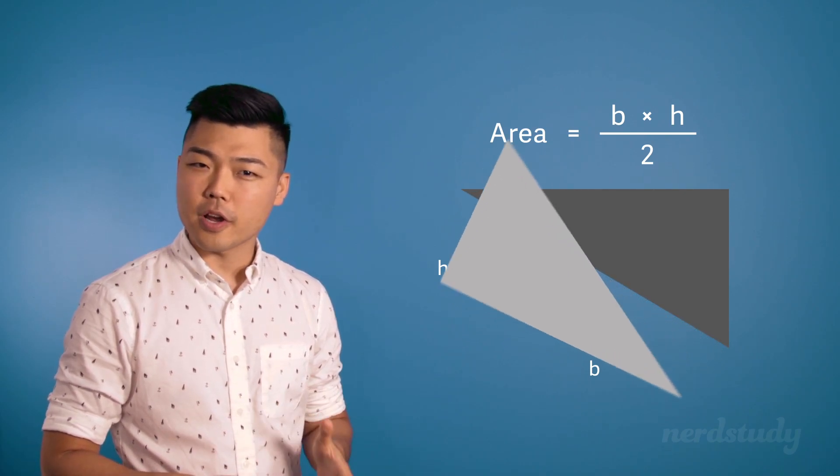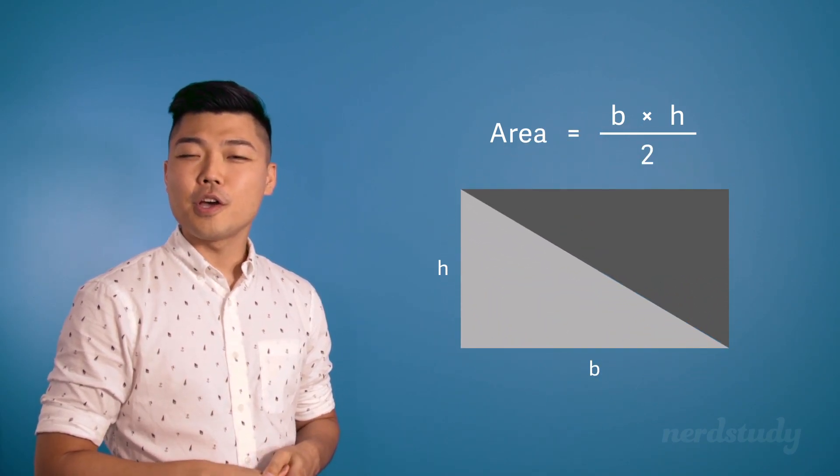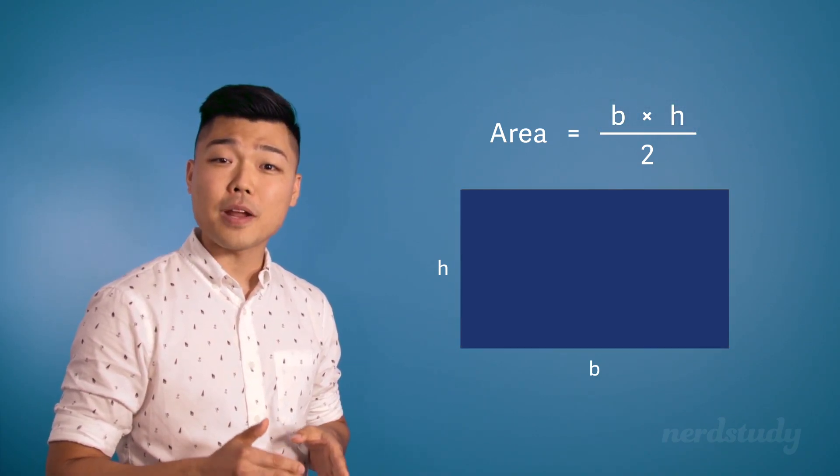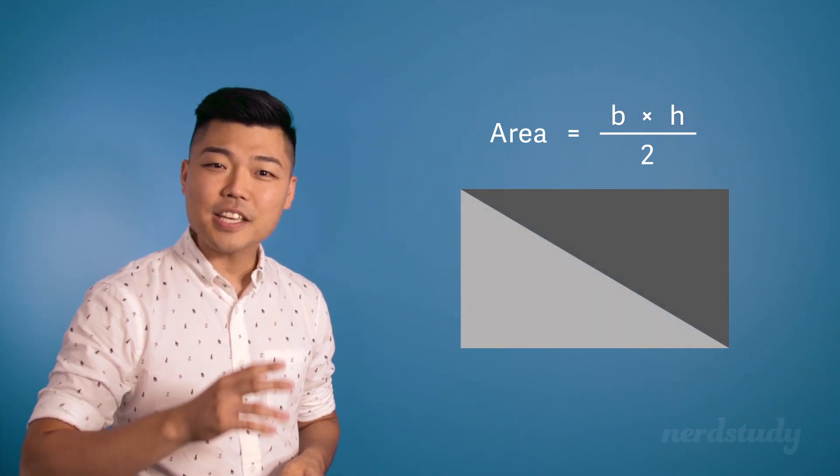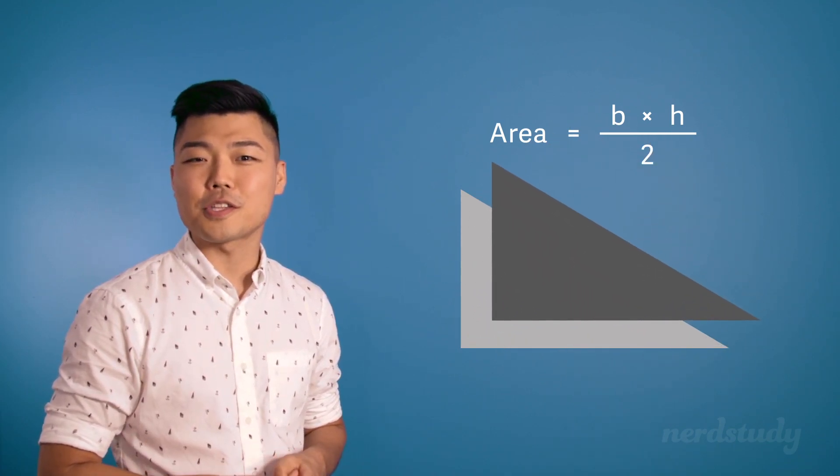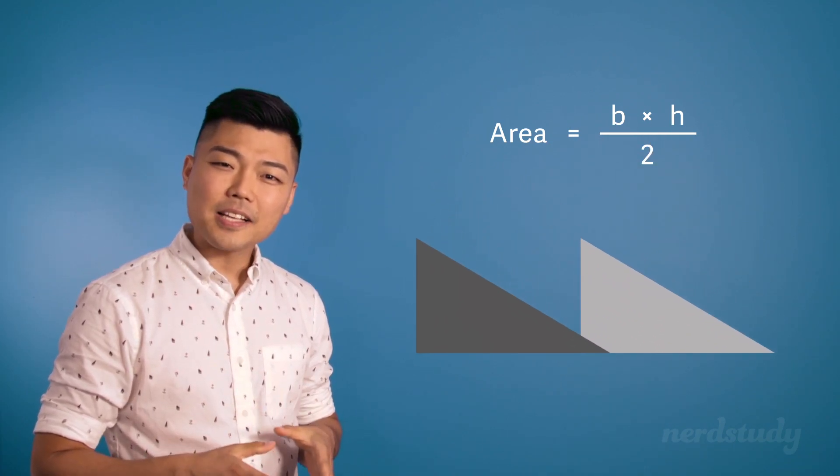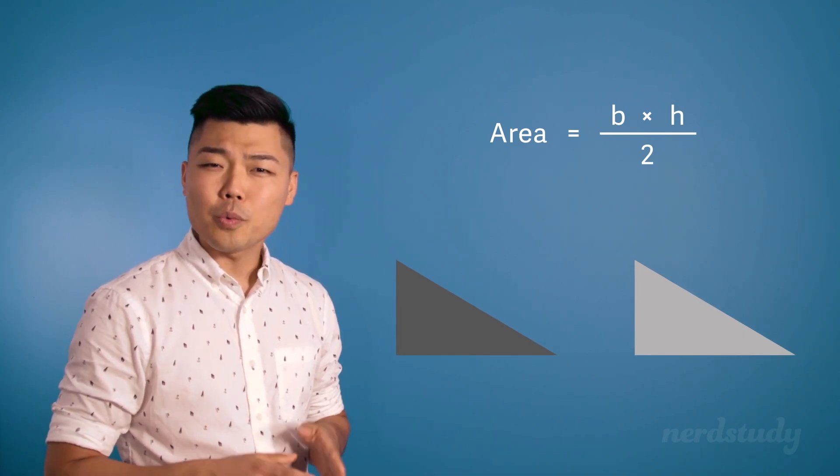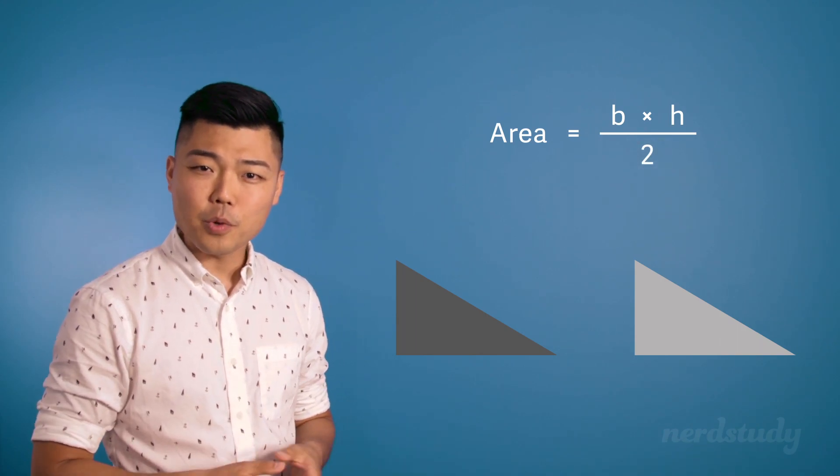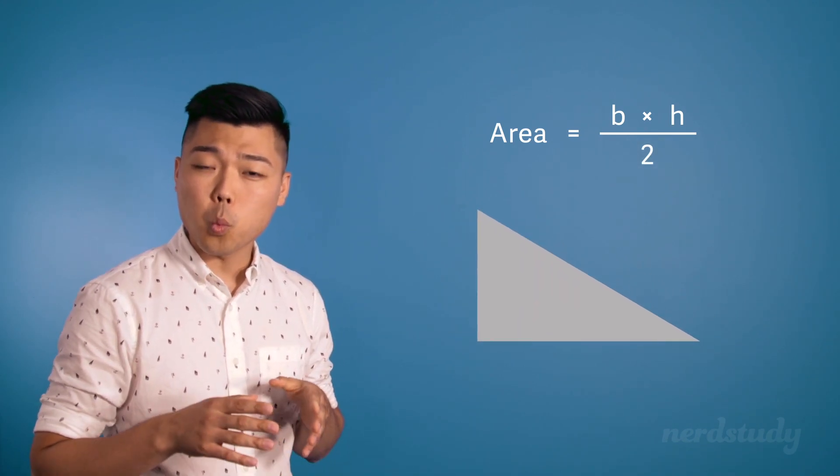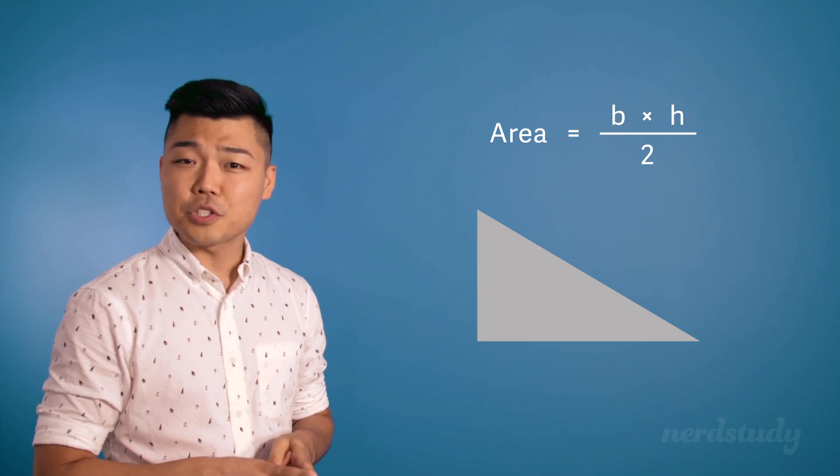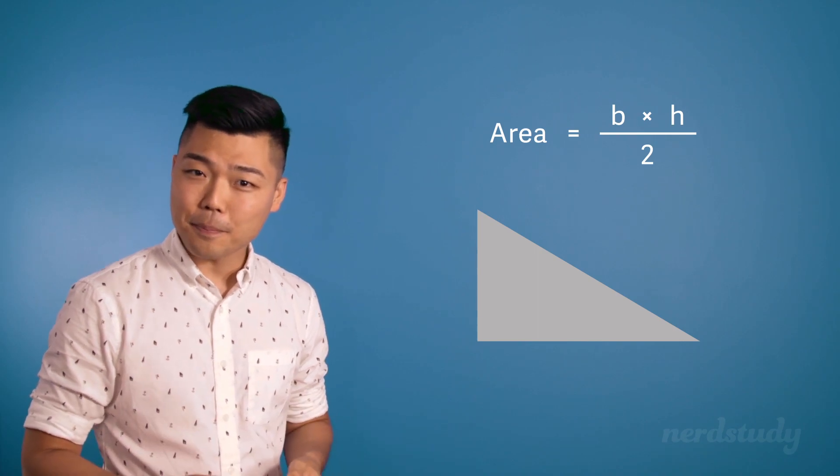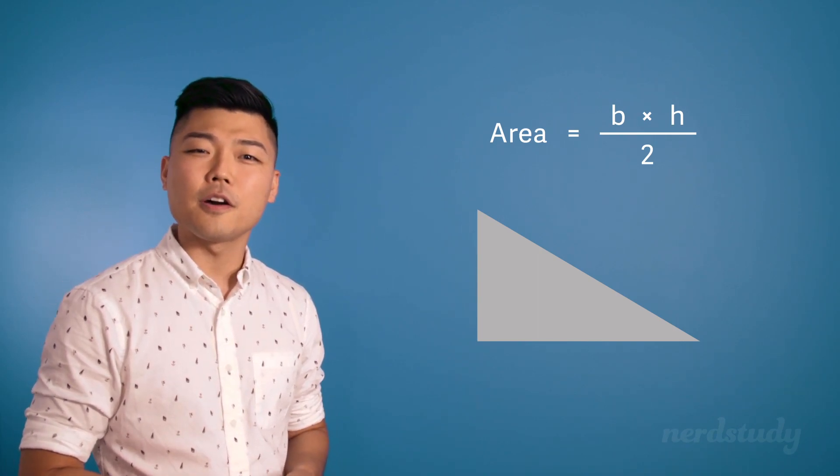And if you flip this triangle back and forth, you'll realize that doing base times height gives you the area of a rectangle which is exactly two of the triangles that we're trying to find. Since it's exactly double the area of the triangle that we're trying to find, what we need to do is divide by 2 and we would get the area for just the one triangle that we were originally interested in. This is why we do base times height divided by 2 to get that area of a triangle.